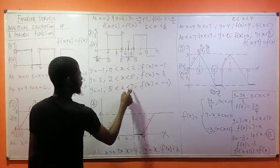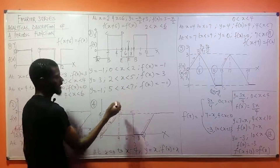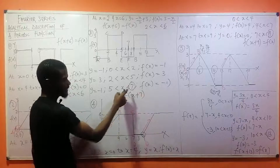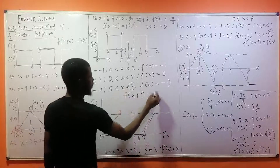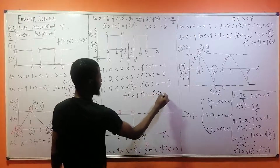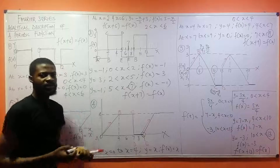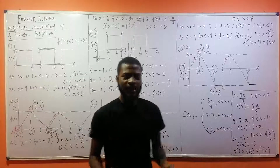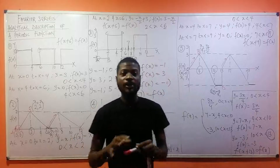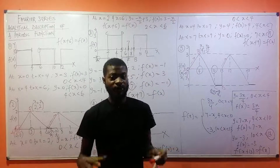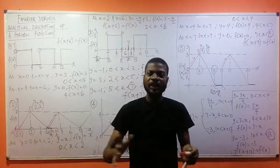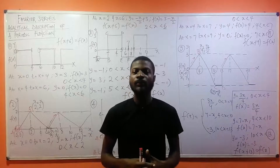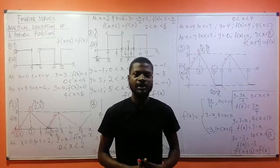Therefore f(x + 7) = f(x) because seven is the period of this function. I hope you now understand how to describe a periodic function analytically. Thank you very much for watching. Remember to share this video with your course mates.